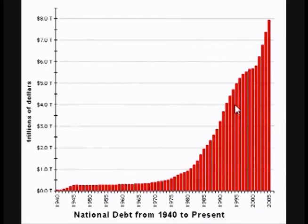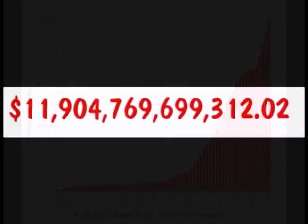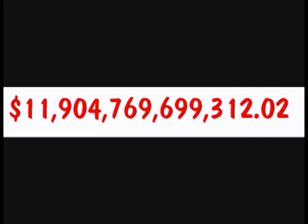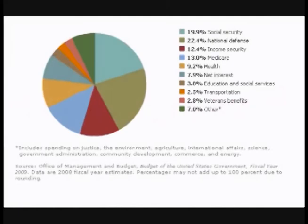Notice that the amount of time keeps getting smaller each time we add a trillion dollars. At the time of recording this — November 3rd, 2009 — the national debt is now $11 trillion, $900 billion, which works out to each citizen of the United States having a share of debt of over $38,750.